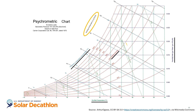Second is specific volume, shown as diagonal green lines and expressed as cubic meters per kilogram of dry air. Think of this as the amount of space occupied by a kilogram of air at a given temperature and humidity. In other words, specific volume is the inverse of density.